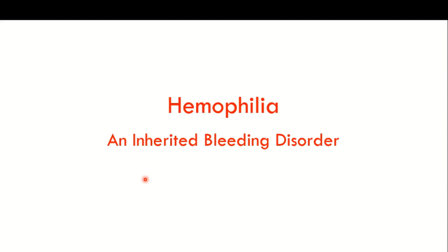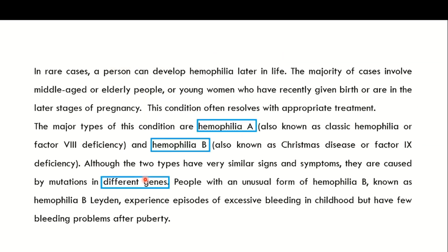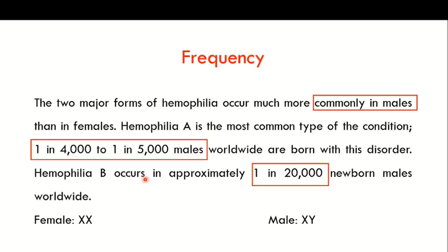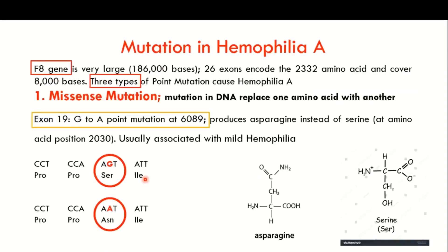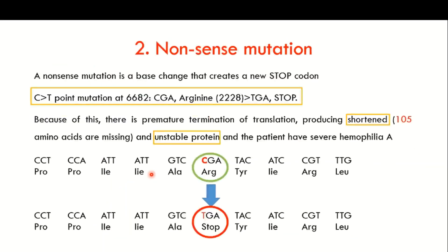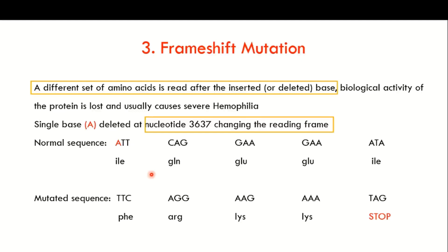I told you about hemophilia as an example of the X-linked recessive disorder — what hemophilia is, the frequency of the major types, and the mutations in hemophilia A. In hemophilia A, there are usually mutations in the F8 gene, which codes for factor 8. The common mutations include missense mutations, nonsense mutations, and frameshift mutations in the F8 gene, all resulting in hemophilia A.